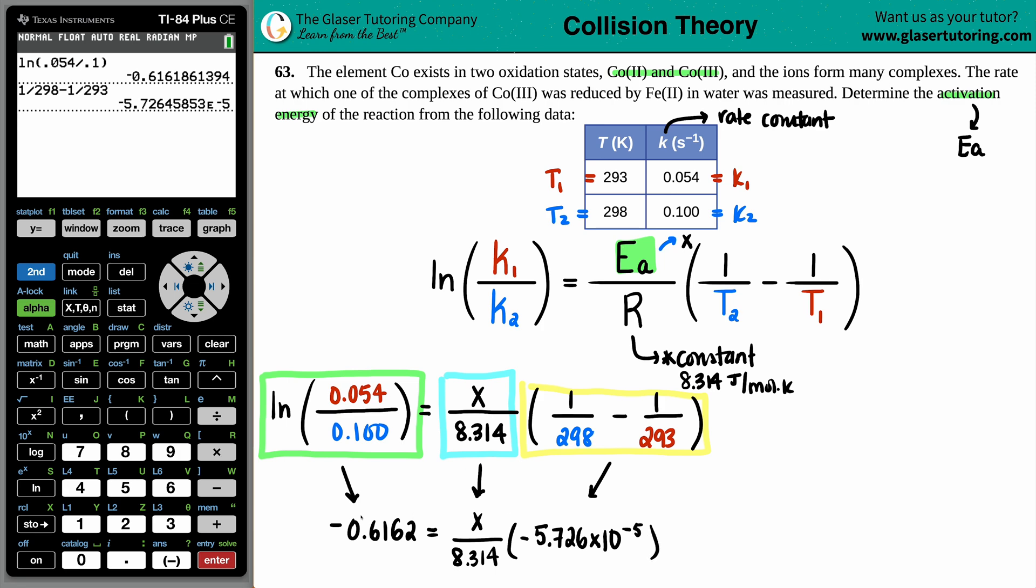Now all we got to do is just clean this up a little bit. I have two numerators on the right-hand side. I have this X value, and then I have this number. So I can just simplify this and put them into one single fraction. These go together. So maybe what I'll do is I'll just put like a little border here, and I'll say negative 0.6162 equals negative 5.726 times 10 to the negative fifth. That's being times by the X value divided by the 8.314.